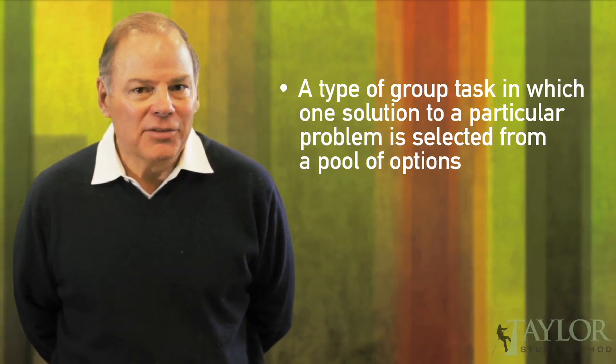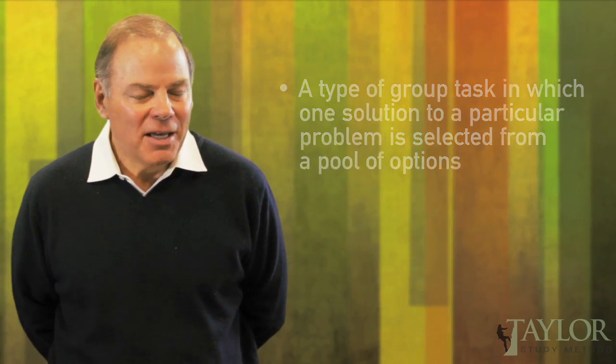Let me give a couple of examples. In a disjunctive task, where a group has to choose one alternative from many, think about a school board. The school board maybe has a budget to fund one project, and you have six people presenting, each presenting their own pet project, but you can only choose one. That's a disjunctive task.